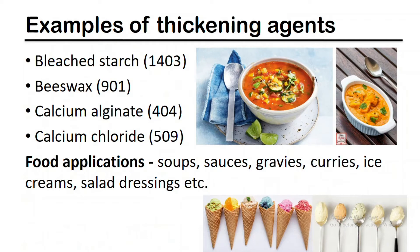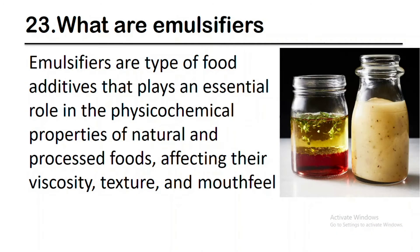Bleached starch, calcium alginate, and calcium chloride are some examples of thickening agents. Soups, sauces, gravies, curries, ice cream, and salad dressings are some food applications of thickeners. Emulsifiers are a type of food additive that plays an essential role in the physicochemical properties of natural and processed foods.